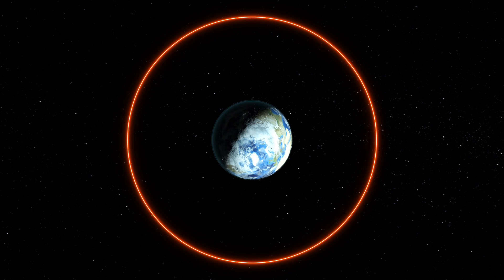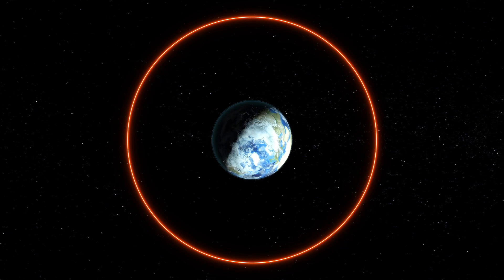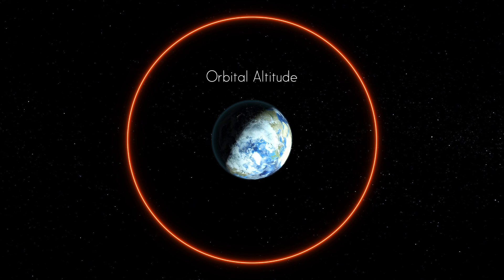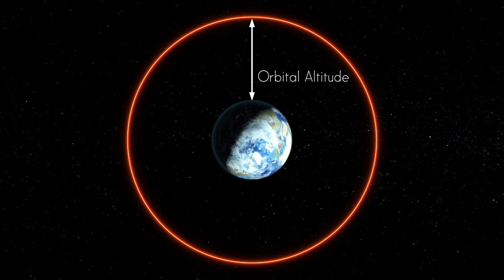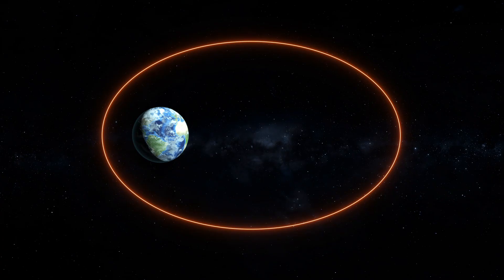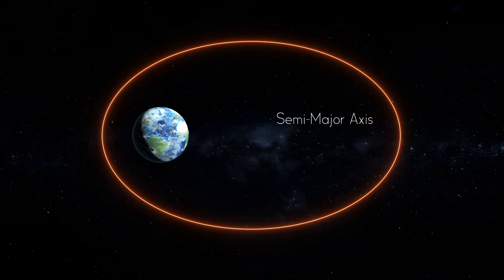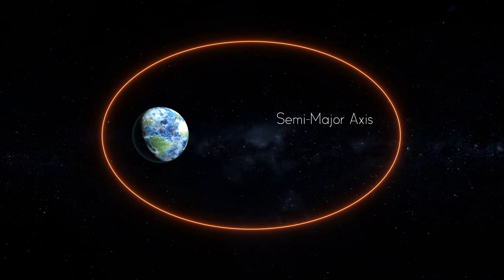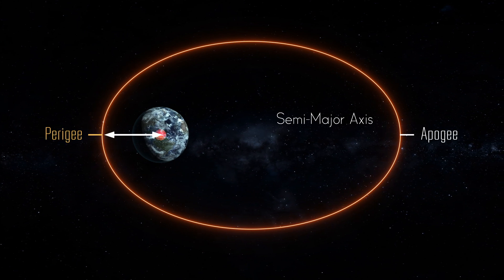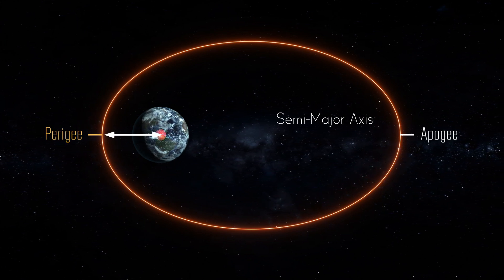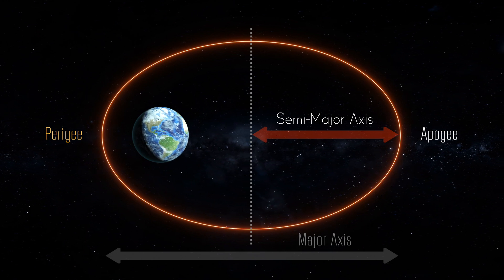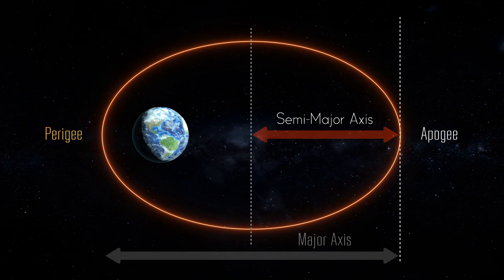In order to better explain orbits, let's first review some key terms. First, orbital altitude — the height of the orbit above the surface of the Earth. The second term is semi-major axis, which is the average distance between apogee and perigee measured from the center of the Earth. More simply, it is half the major axis, where the major axis is the distance from apogee to perigee.